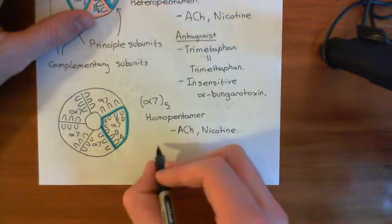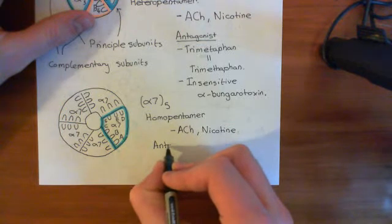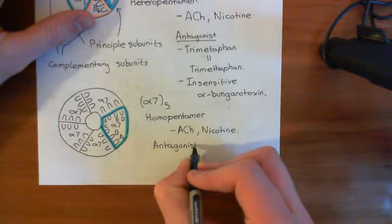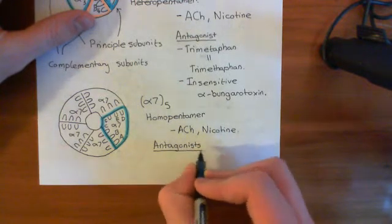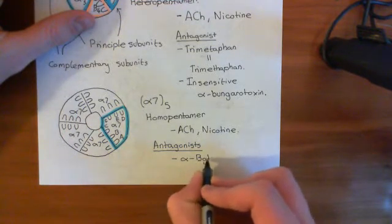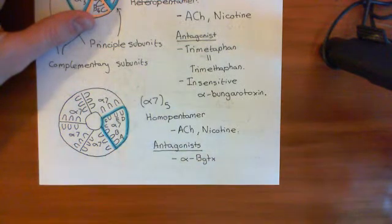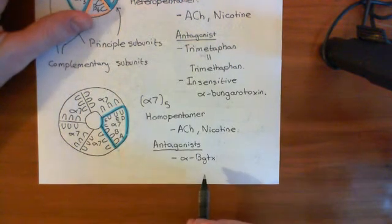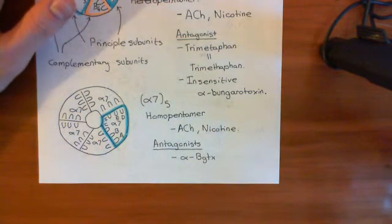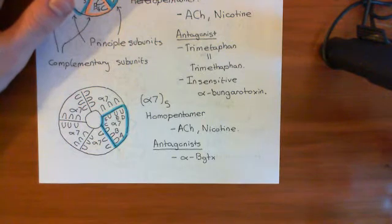Now, antagonists. As far as antagonists go, this alpha-7-5 homopentamer is susceptible to alpha-bungarotoxin. So, alpha-bungarotoxin, BGTX, does bind to the binding sites of this alpha-7-5 homopentamer and will stop acetylcholine from binding. So, if you expose your alpha-7-5 homopentamer to alpha-bungarotoxin, then it will bind to these binding sites and stop acetylcholine from being able to bind to them.